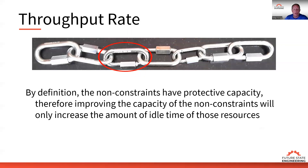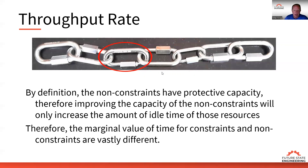By definition, non-constraints have protective capacity, and therefore improving the capacity of non-constraints will only increase the idle time of those resources. It does us no good to increase the capacity of non-constraint links in the chain that already have more capacity — it's not going to strengthen the chain. Unless we can utilize that capacity to get more constraint units through the system, it won't improve the strength of the chain. Therefore, the marginal value of time for constraints and non-constraints is vastly different.